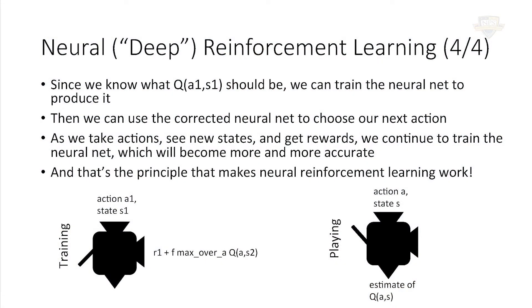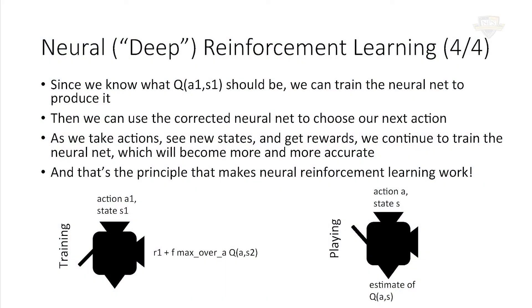If these two things are supposed to be equal, why not take a neural net and train it using this as a target value? It looks risky — what's in the target value? The max over this exact same Q function that isn't very good yet, that's why we're trying to learn it. But the other part — the short-term reward — is solid, absolutely solid. And it turns out this approach is the standard reinforcement learning approach and it actually does work over time. The neural net typically becomes more and more accurate, and in a nutshell, that's what makes neural reinforcement learning work.